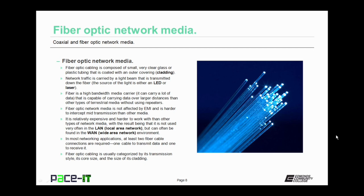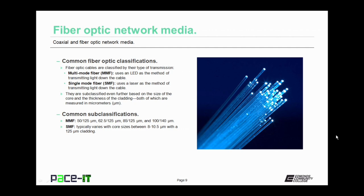Fiber optic network media is not affected by electromagnetic interference and is a lot harder to intercept mid-transmission than other types of media. However, fiber optic cabling is relatively expensive and harder to work with, so it's not used very often in the local area network but can often be found in wide area network environments. In most networking applications, you need to use two fiber optic cables — one to transmit data and one to receive it. Fiber optic cabling is usually categorized by its transmission style, core size, and the size and type of cladding.